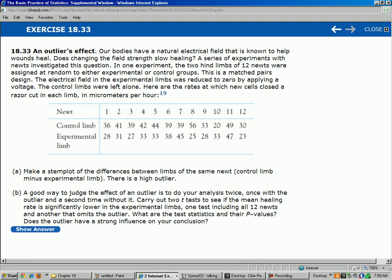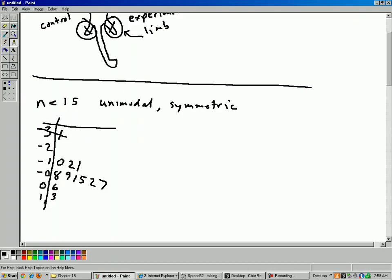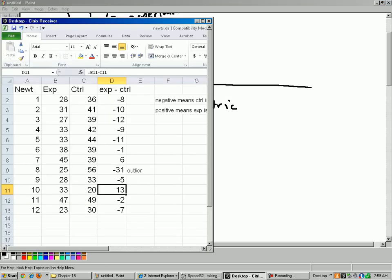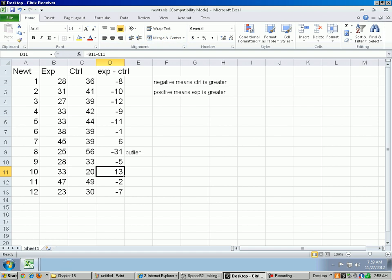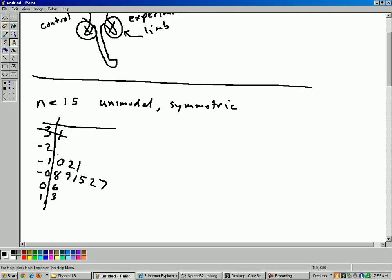Oh, by the way, quick comment here. What if I had subtracted the other way around? Back to our raw data here. What if I had done control minus experiment? Then it would have mostly positive numbers, but the shape of the histogram would be the same, except I'd have a positive 31 instead of a negative 31. But it would still be skewed. We'd still have an outlier. All right, so we're done with part A.